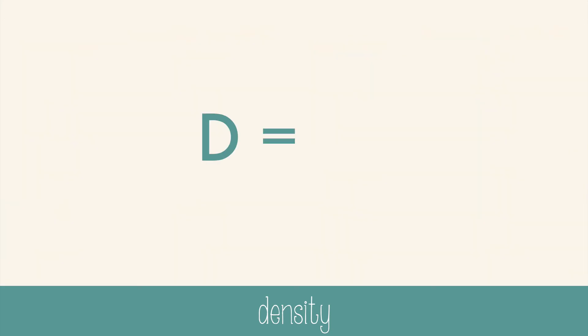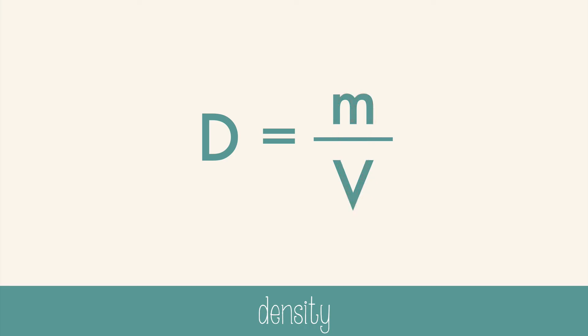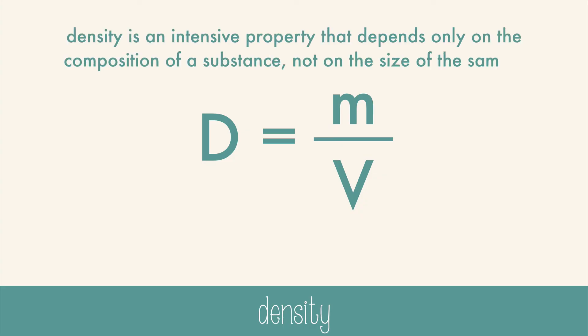To calculate density, we use mass over volume. I remember this because it looks like the DMV, and I just love going to the DMV — okay, maybe not. Density is an intensive property, which means as long as you have the same substance, it will have the same density no matter how much of the substance you have. It depends only on the composition of the substance, not the size of the sample.